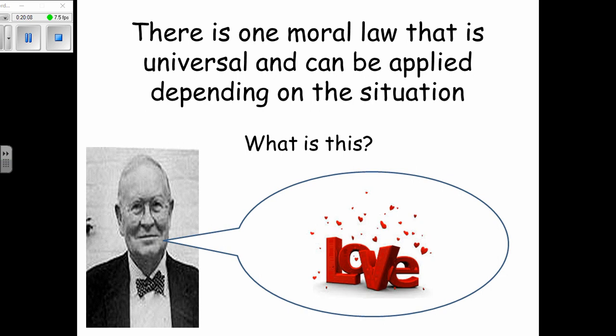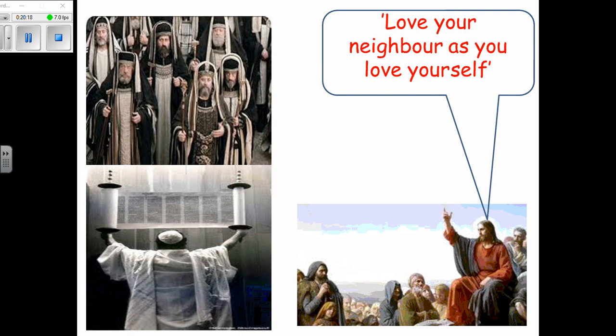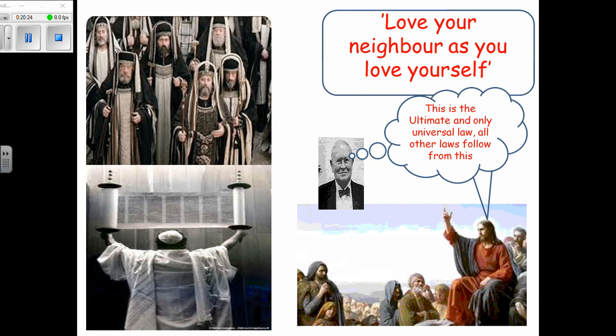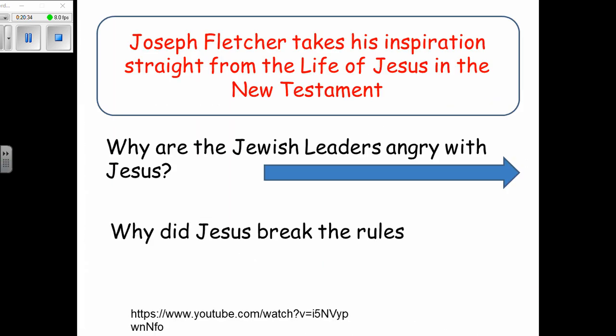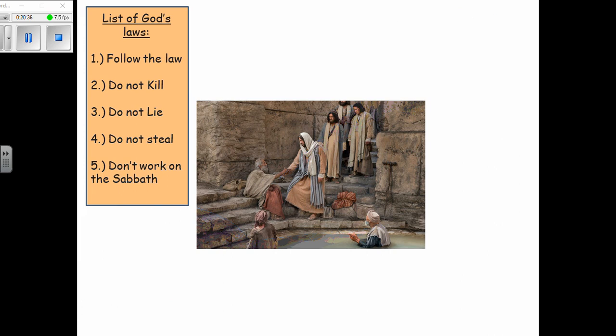For Fletcher, there is one moral law that is universal and can be applied depending on the situation, and this is love — love your neighbor as you love yourself. Fletcher calls this the ultimate and only universal law; all other laws follow from this. All other commandments — do not kill, do not lie, do not steal, do not work on the Sabbath — are really about love.